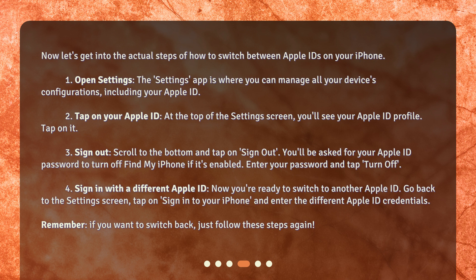Step 3: Sign Out. Scroll to the bottom and tap on Sign Out. You'll be asked for your Apple ID password to turn off Find My iPhone if it's enabled. Enter your password and tap Turn Off. Step 4: Sign in with a different Apple ID. Now you're ready to switch to another Apple ID. Go back to the Settings screen, tap on Sign in to your iPhone, and enter the different Apple ID credentials.